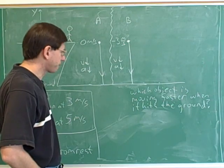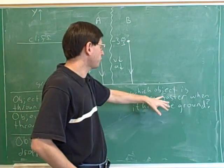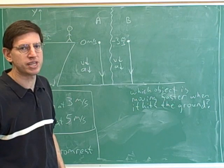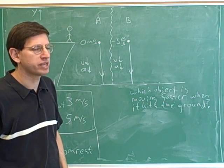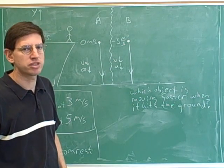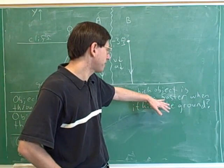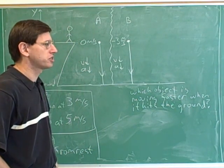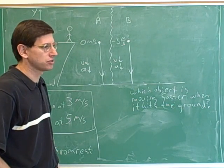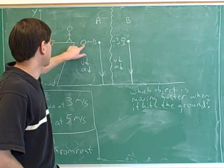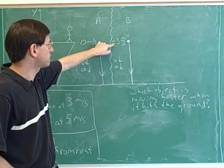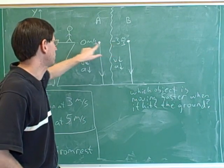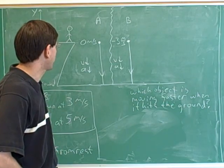So object B is going to be moving faster when they hit the ground. The question is asking about speed, not velocity. Remember that velocity indicates both speed and direction, but the question is just asking which is moving faster — which has a higher magnitude of velocity. Starting at speed 0 versus starting at speed 3 and speeding up, B will end up going faster than A.